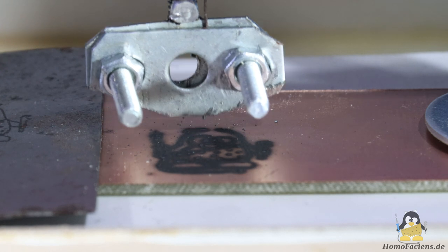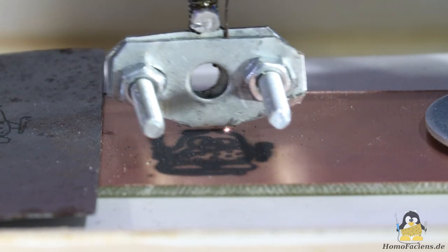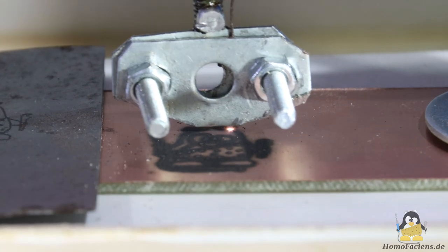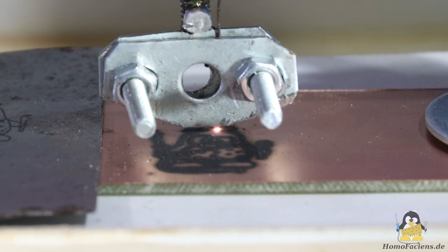The copper coating is not completely cut through. At least with these settings, the process is not suitable for insulation milling, but further experiments will follow.